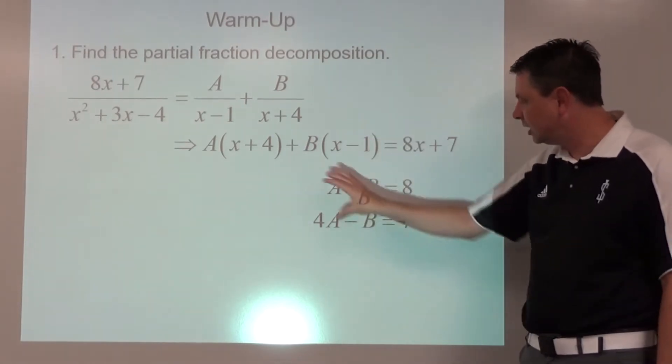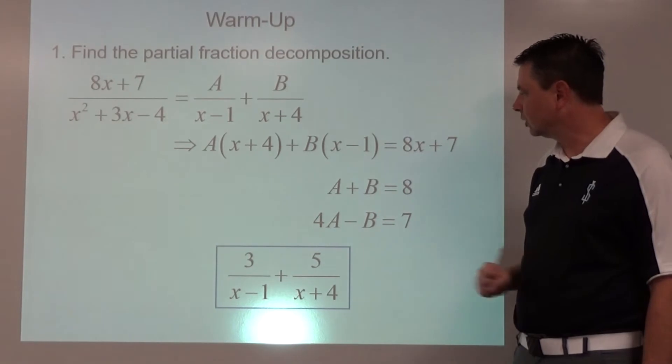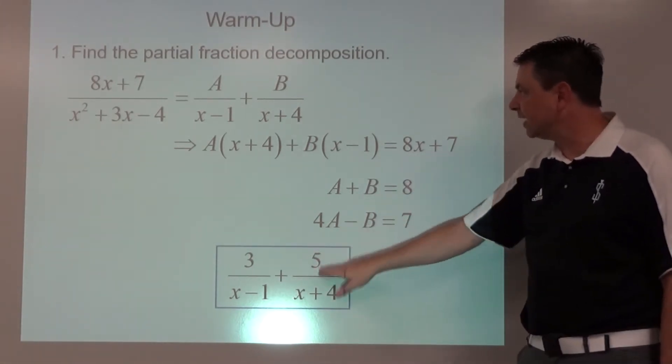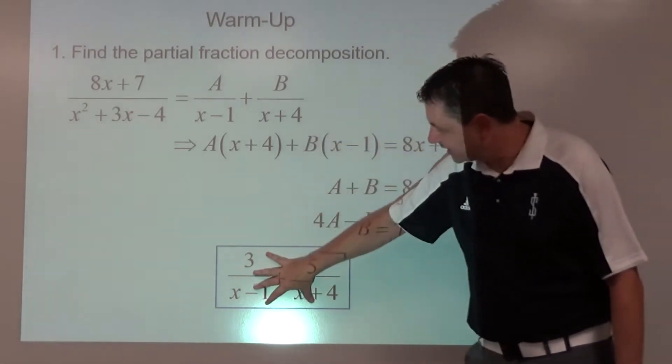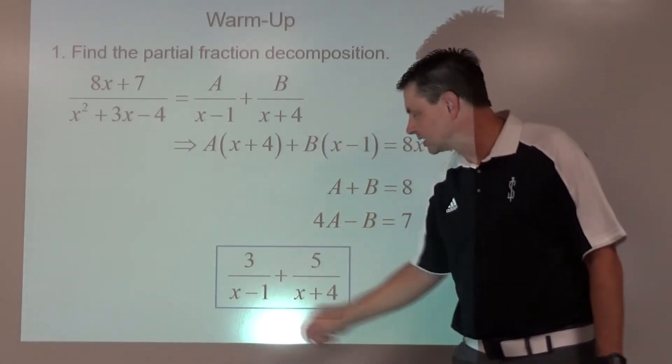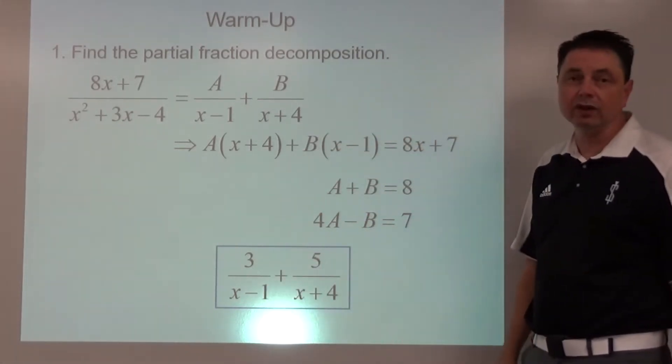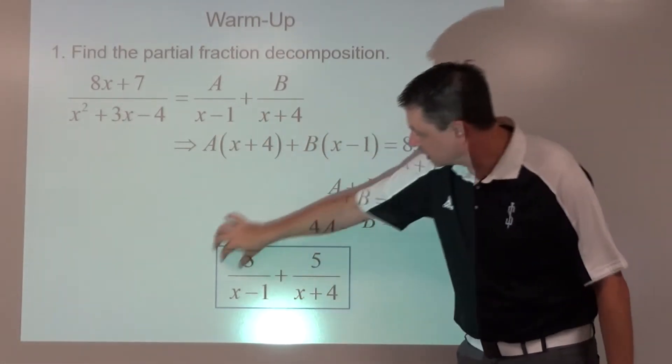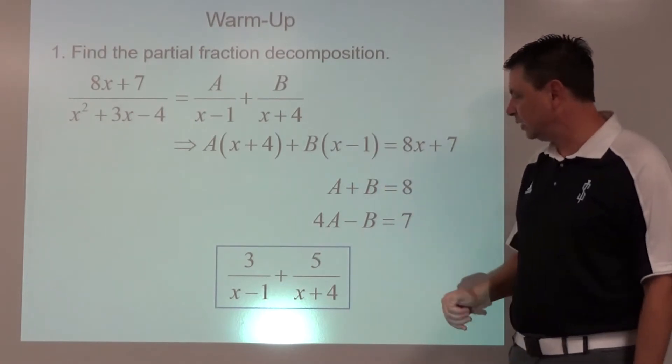5a equals 15, so a is going to be 3. And then if you solve for b you're going to get 5, and we get this: 3 over x minus 1 plus 5 over x plus 4. If you have these reversed, you might have this reversed and you may have found out that a was 5 and b was 3, and that's fine. Order here does not matter.